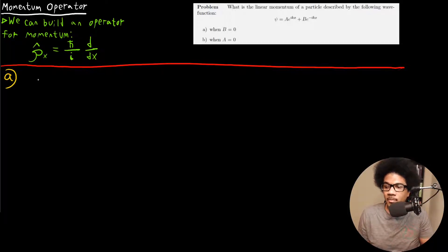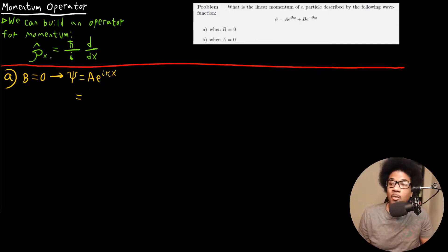For part A, when B is equal to zero, the wave function simplifies to psi = A e^(ikx). From there, what we do here is take the derivative, or we apply the momentum operator to this wave function, because it should give us the momentum, the wave function back again, and the eigenvalue, which will be the momentum.